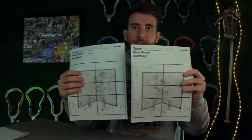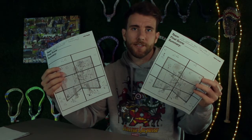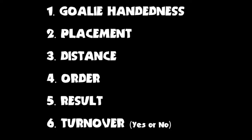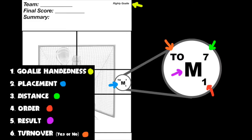Each sheet contains all the shots taken by one of the two teams in a college lacrosse game, so there are at least two sheets for each game. There are six factors that I track for each shot: goalie handedness, shot placement, shot distance, shot order, shot result, and lastly, whether or not the shot was a turnover. These factors are all annotated around each shot that's marked on the chart.